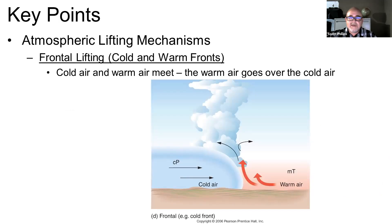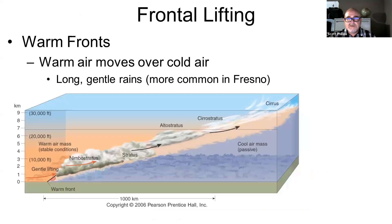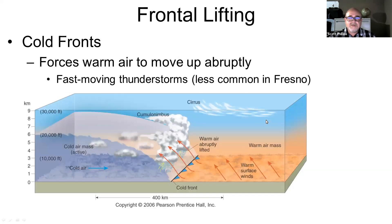The fourth and last mechanism is called frontal lifting — what we call cold fronts and warm fronts, which we'll discuss more in a future module. Essentially, this is where masses of cold and warm air come into contact, and in each case the warm air is pushed over the cold air. You can have a warm front, where warm air intrudes into an area of cold air and slides gently over it — more common in Fresno where we see long cloudy skies. We can also have cold fronts, where cold air moves in and rapidly forces the warm air up — less common in Fresno, more common in the Midwest.